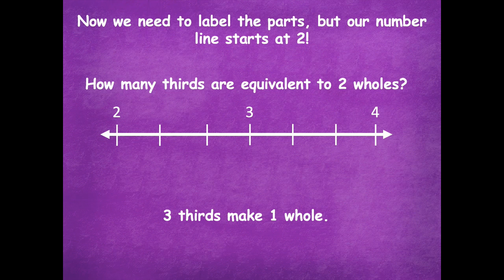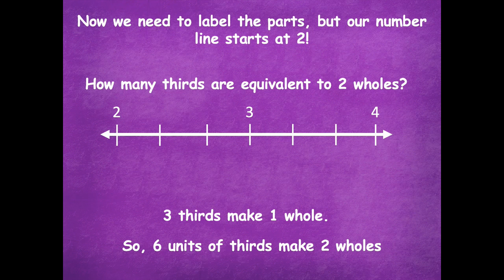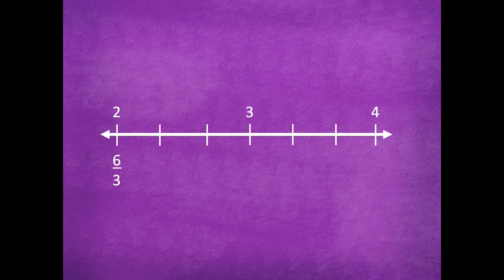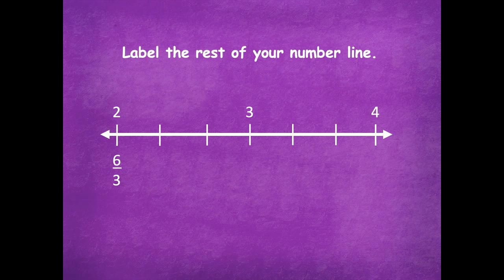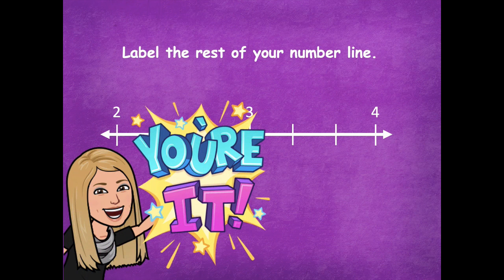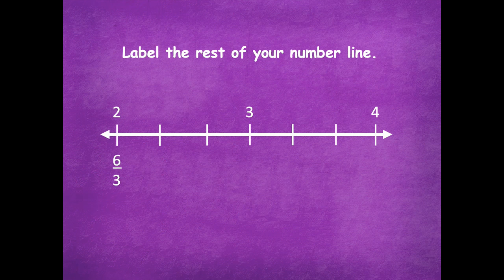We know that three thirds make one whole, so six thirds make two wholes. Six thirds is the same as two wholes — you can also check it by saying six divided by three equals two. Now label the rest of your number line. Pause the video, label the fractions all the way from two to four with all the fractions in between, and then click play when you're ready to go over it together.